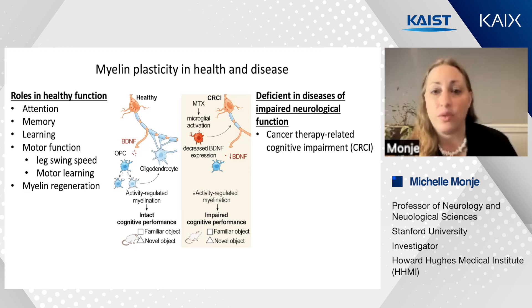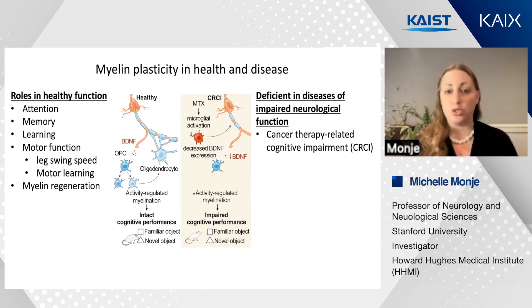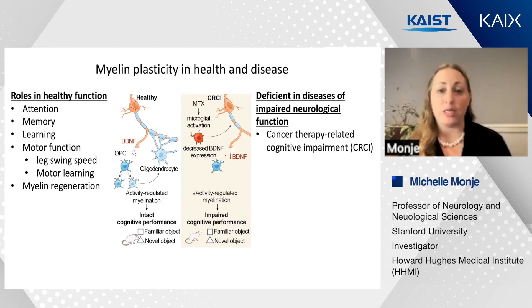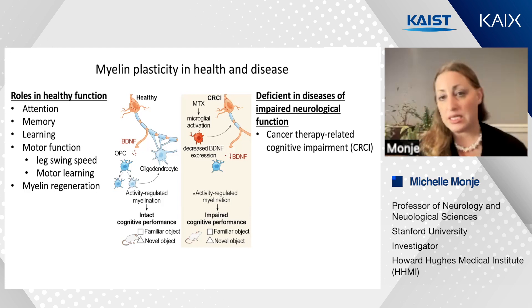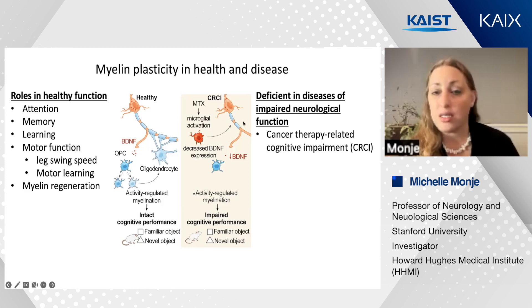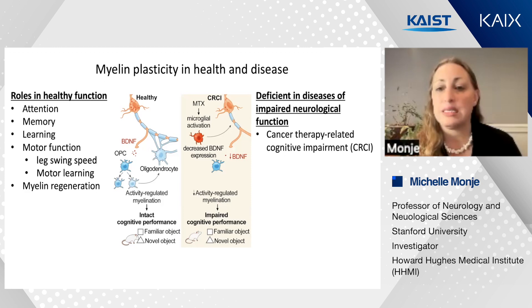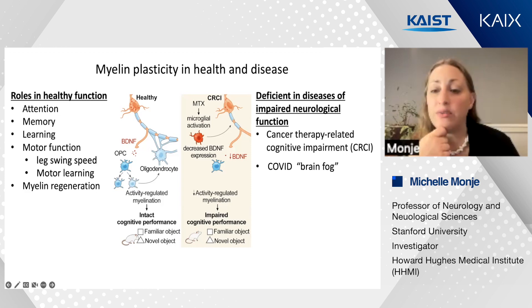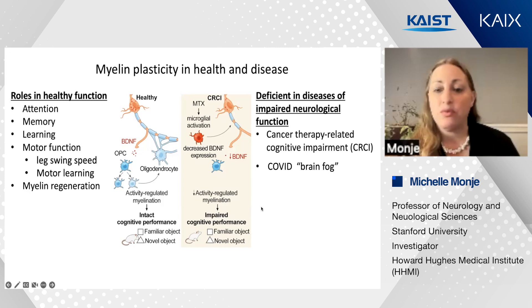It's very common that after cancer therapy, there is a reproducible syndrome of cognitive impairment characterized by impaired attention, memory, speed of information processing, and multitasking. We found that one key aspect of that is neuroinflammation—specifically microglial reactivity-mediated loss of myelin homeostasis and plasticity. Given that the mechanism of cancer therapy-related cognitive impairment is chiefly inflammatory in nature, we worried that the brain fog people experience so commonly after even relatively mild COVID might relate to similar mechanisms.